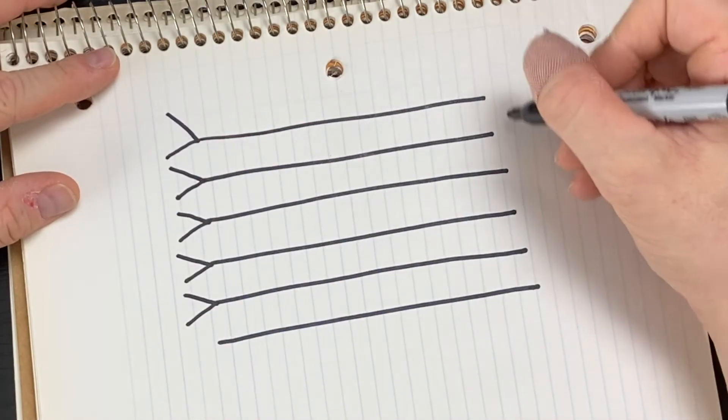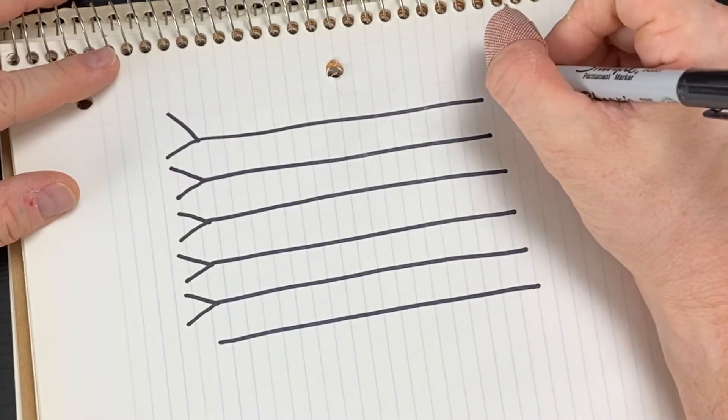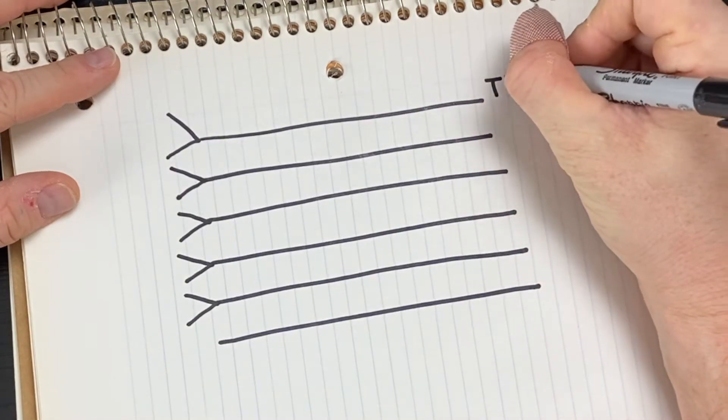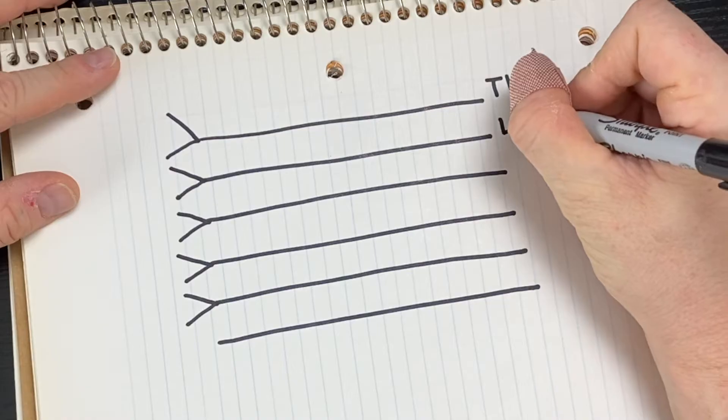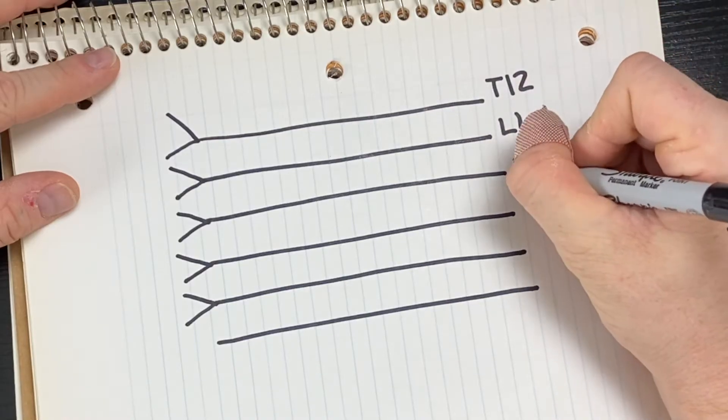Then you'll go on to the right and start numbering all six nerves, so we'll start with T12 going through L1, L2, all the way through L5.